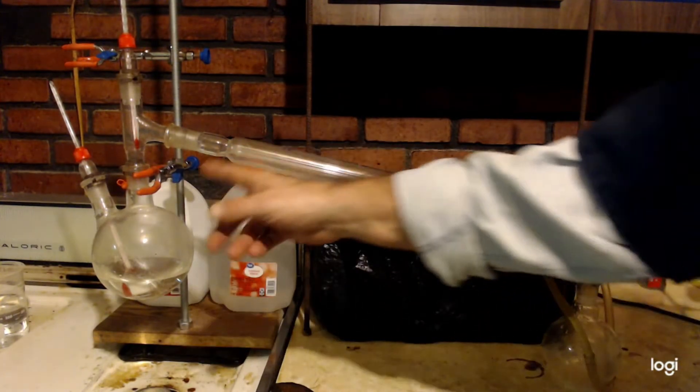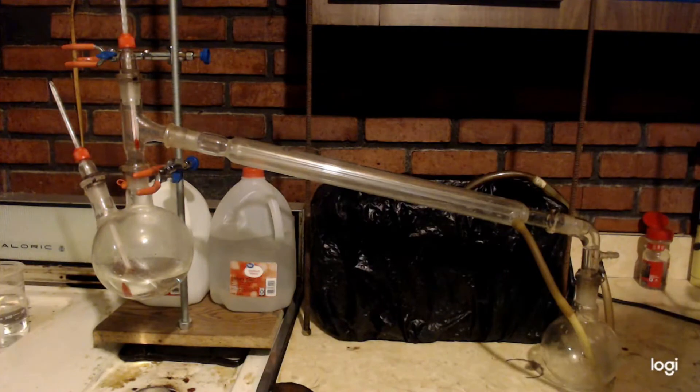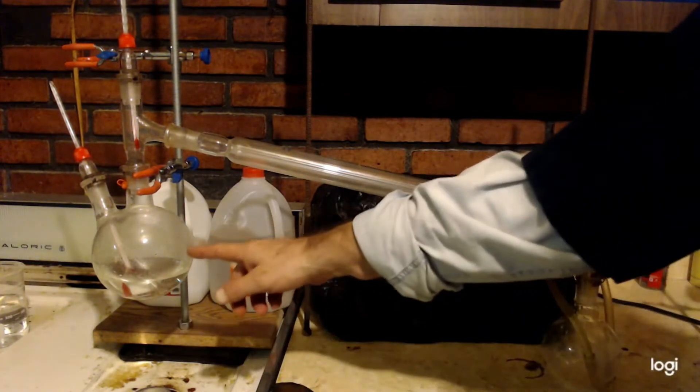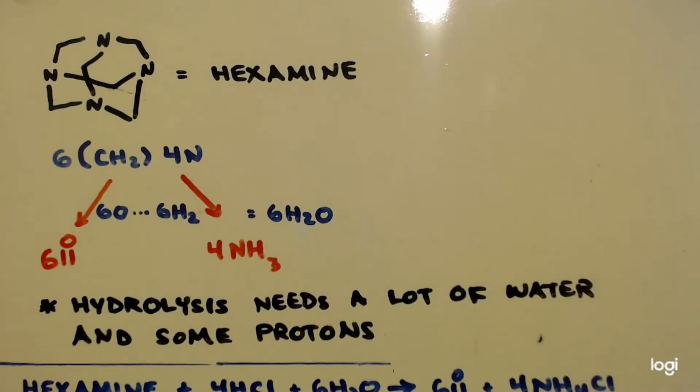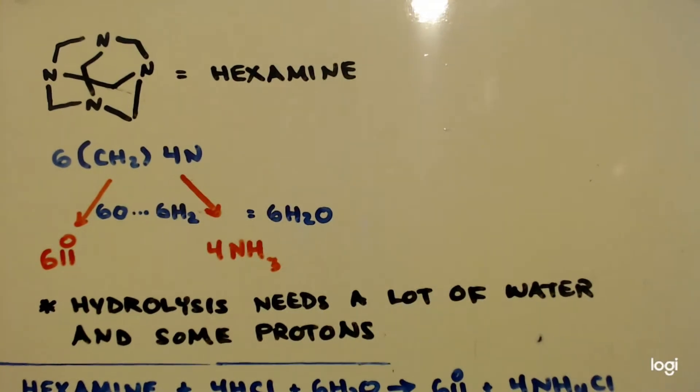And now I need to add 200 milliliters of hydrochloric acid that I have in the freezer right now cooling down. So what have we done so far? We've got some hexamine and we've purified it by putting it in water, dissolving it and filtering out the impurities.